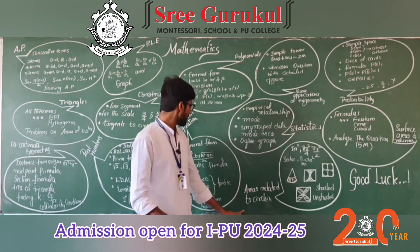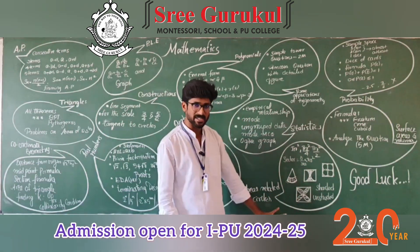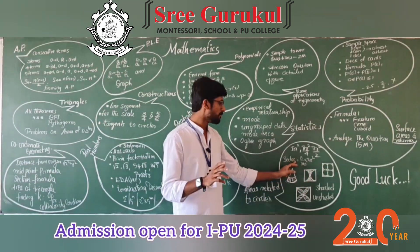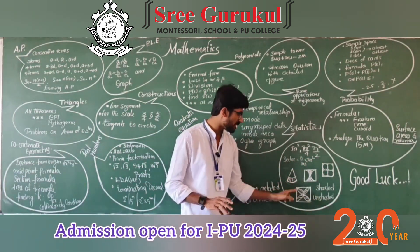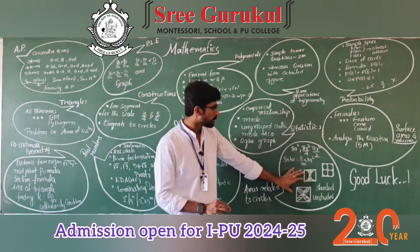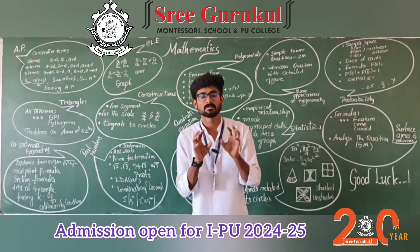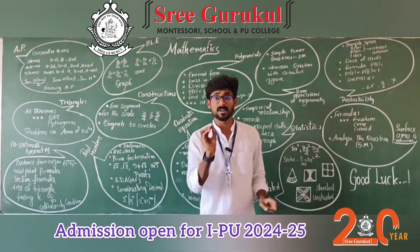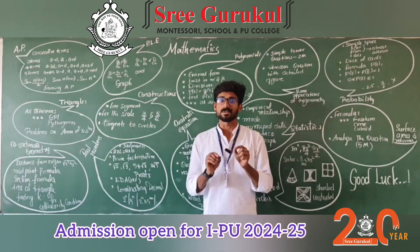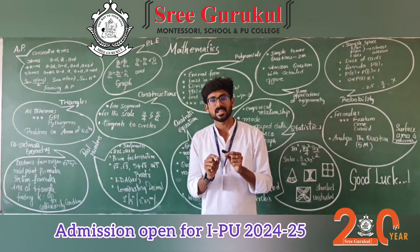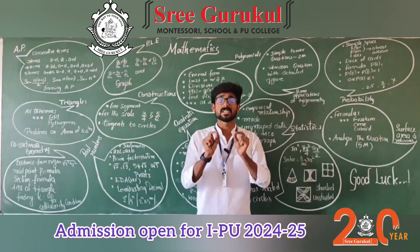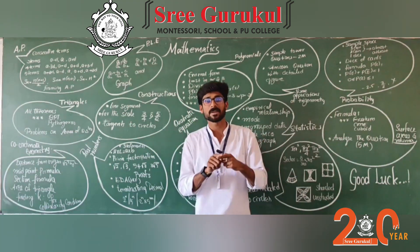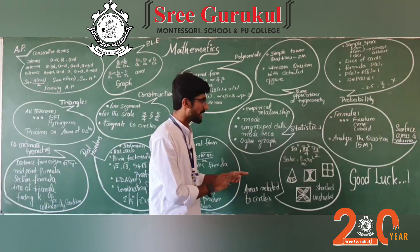For Areas Related to Circles, know the formulas for area of circle, quadrant, semicircle, and sector — area of sector = (θ/360) × πr². For expected questions, try shaded region models involving combinations of squares and circles. One important note: sometimes the question asks for the shaded region, and sometimes for the unshaded region, so read the question carefully. Be careful with formula selection, substitution, and the final answer with proper units.